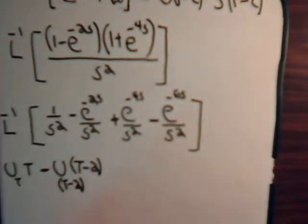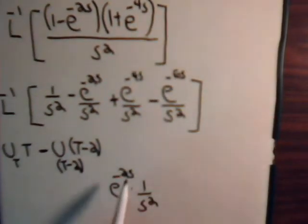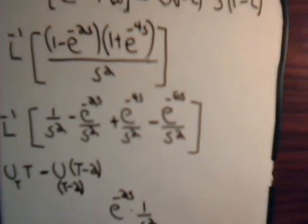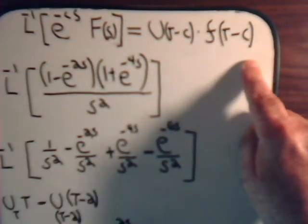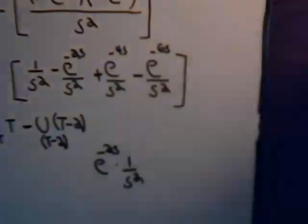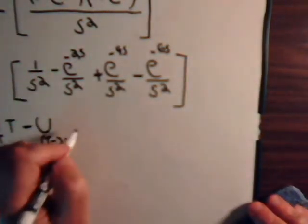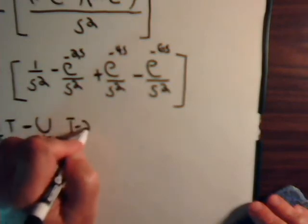That's because e to the minus 2s times 1 over s squared gives us 1 over s squared which is t, but it must be f of t minus c, and c is 2, so we have u of t minus 2 times t minus 2.